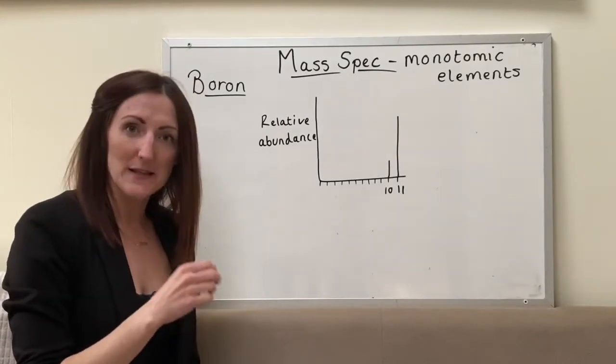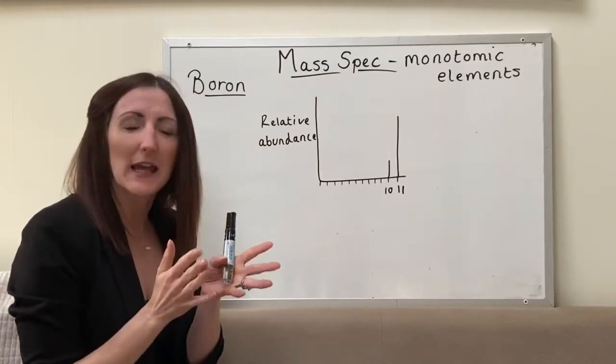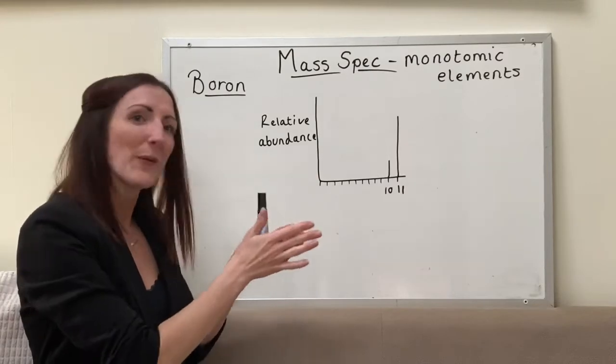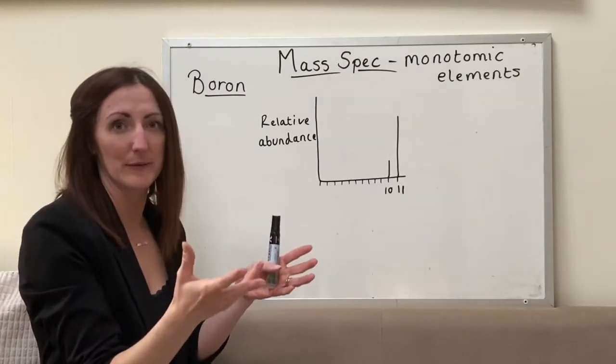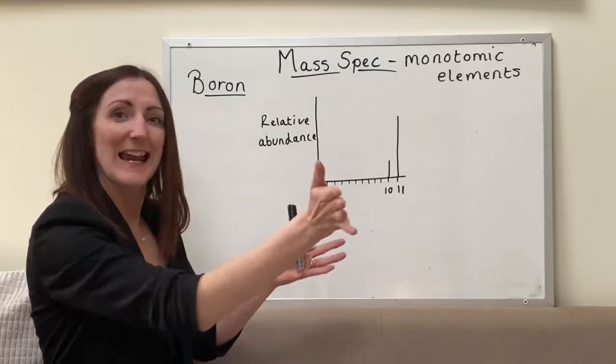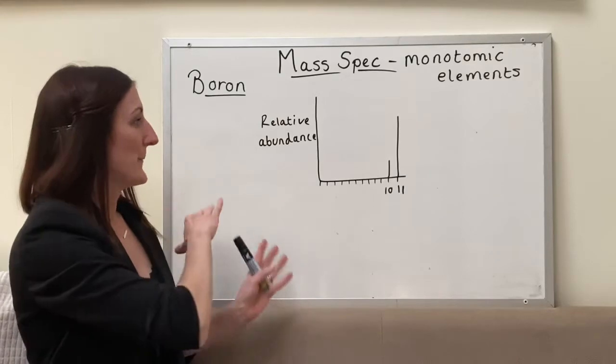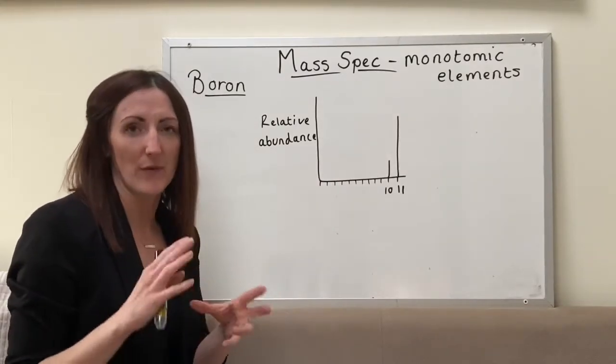We're going to use boron as our example, so imagine I inject a sample of boron into my mass spec, it gets bombarded with these electrons and the atoms get ionized. It travels through our mass spec once it's been ionized and then depending on its mass it gets deflected around our mass spec and depending on the mass to charge ratio, it's going to get detected by our detector plate and then a line is going to come up basically on our spectra depending on the mass of that sample.